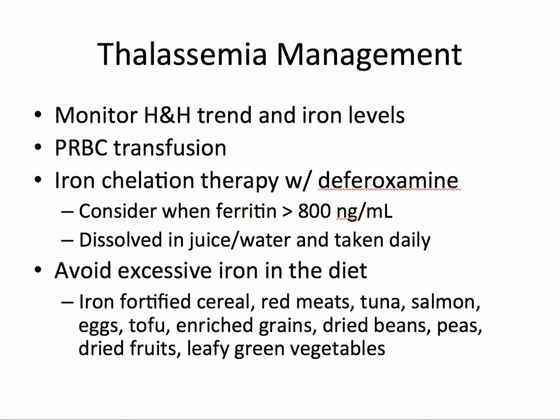For thalassemia, you want to monitor the hemoglobin and hematocrit trends as well as iron levels. These patients may require packed red blood cell transfusions; however, iron levels should be monitored closely during transfusion. Iron chelation therapy with deferoxamine may be necessary — this is often considered when ferritin is greater than 800 nanograms per milliliter. This medication is dissolved in juice or water and taken daily, and essentially it binds iron and allows for secretion through stool. In addition, instruct these patients to avoid excessive iron in the diet.